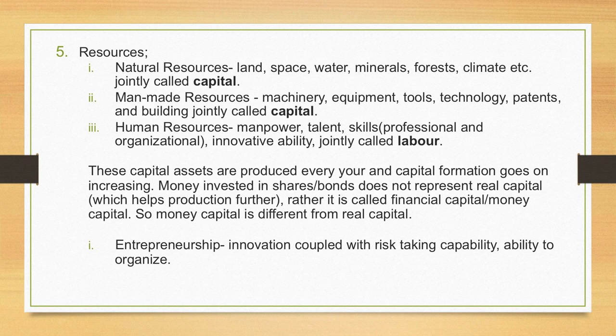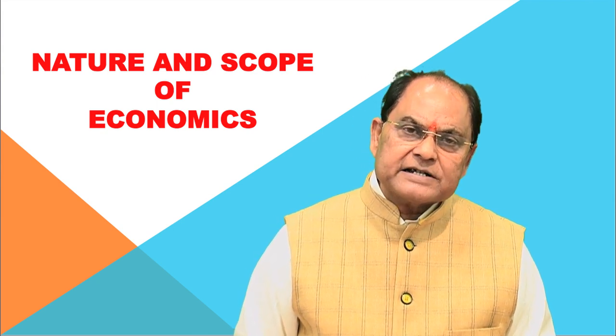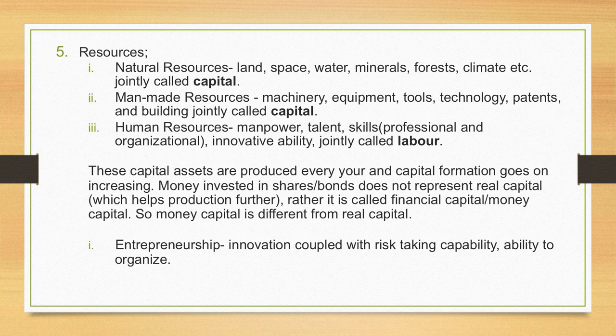There is one more type of capital. People save from their earnings — these savings lead to capital formation. With accumulated savings, some assets are purchased. If money is invested in shares and bonds, these are financial capital and not meant for production. But with capital formation, if assets are purchased which help in production of other items, that is also considered capital — money capital. So there are natural resources, man-made resources, and money capital, all put together known as capital.